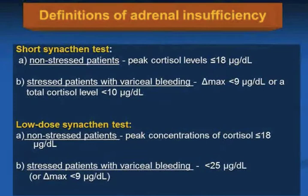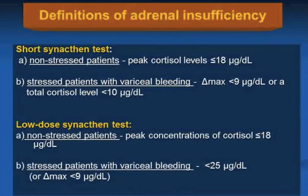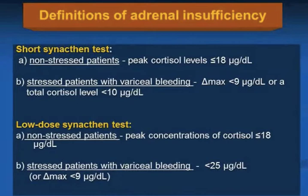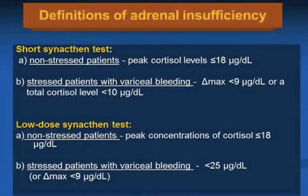Adrenal insufficiency was diagnosed using the short synacthen test based on peak cortisol levels below or equal to 18 mcg/dL in non-stressed patients, and delta max below 9 mcg/dL or total cortisol level below 10 mcg/dL in stressed patients with variceal bleeding — the current criteria for critical illness related corticosteroid insufficiency. Using the low dose synacthen test, diagnosis was based on peak cortisol below or equal to 18 mcg/dL in non-stressed patients and below 25 mcg/dL or delta max below 9 mcg/dL in patients with variceal bleeding. We also evaluated patients with serum albumin above 2.5 g/dL to indirectly assess cortisol binding.